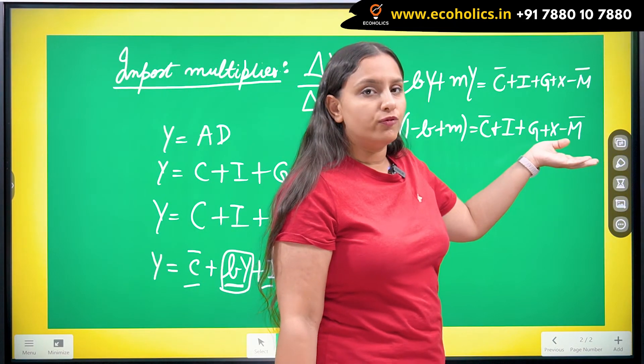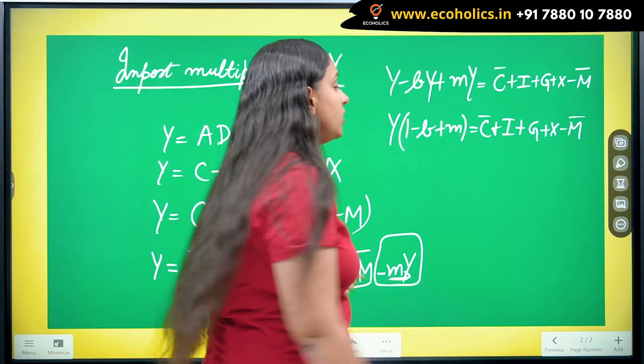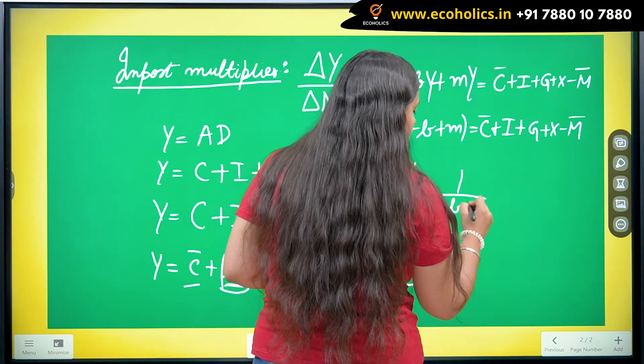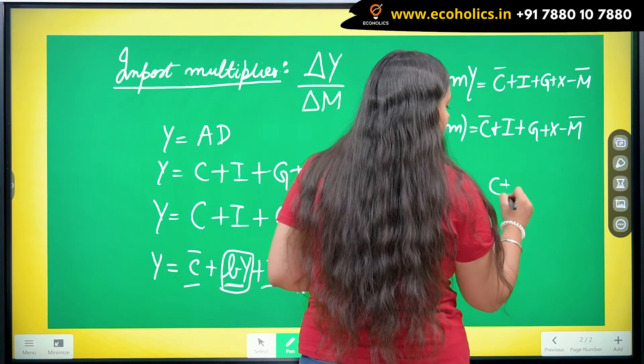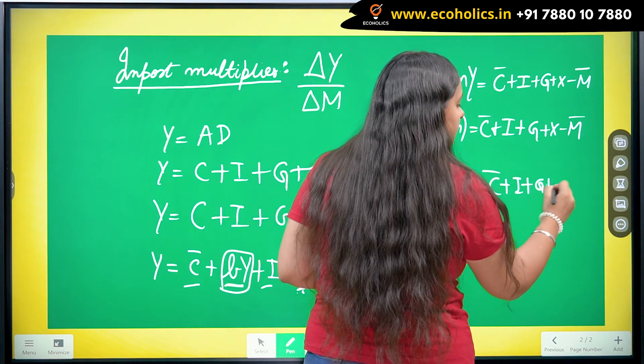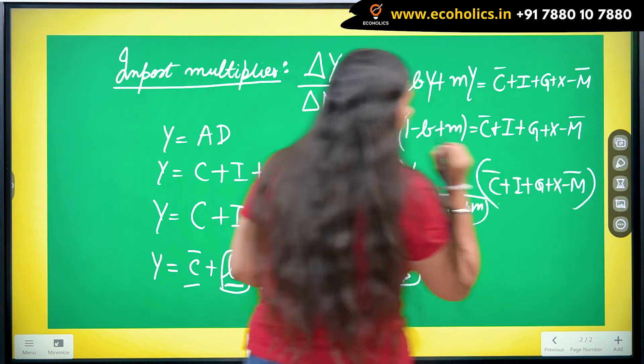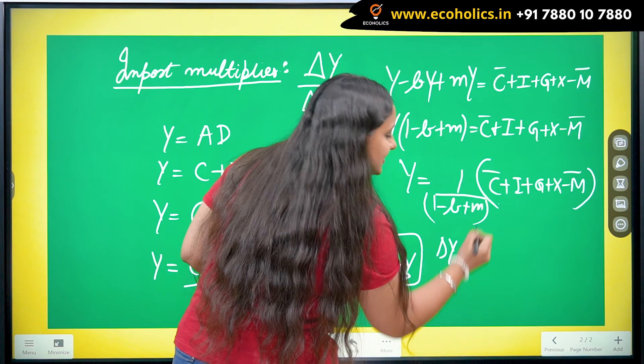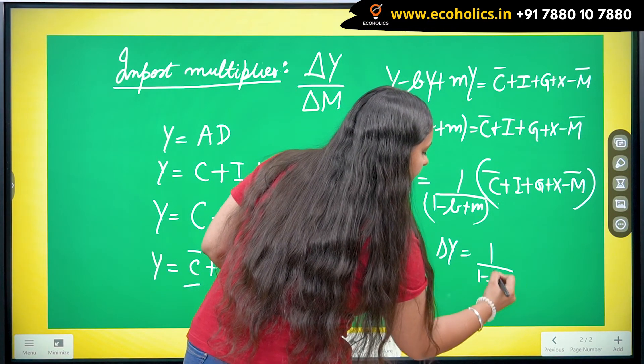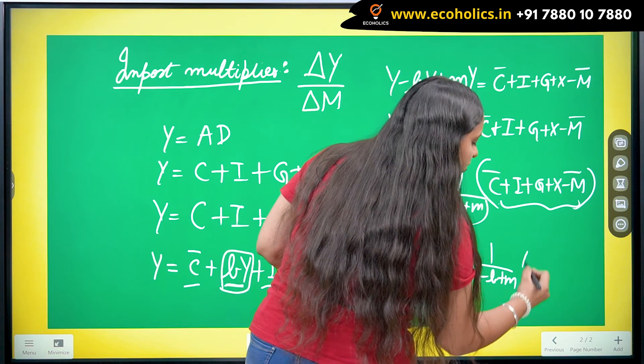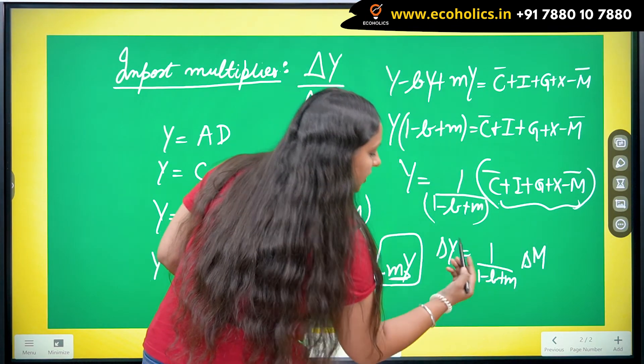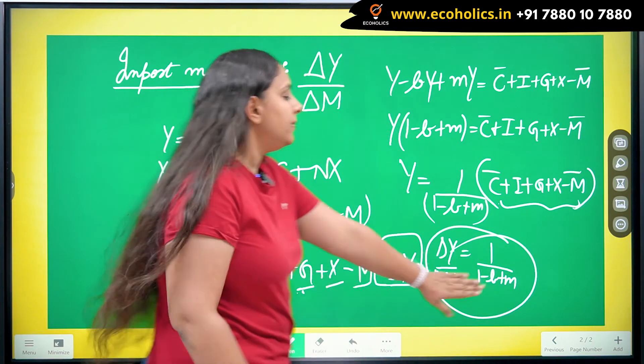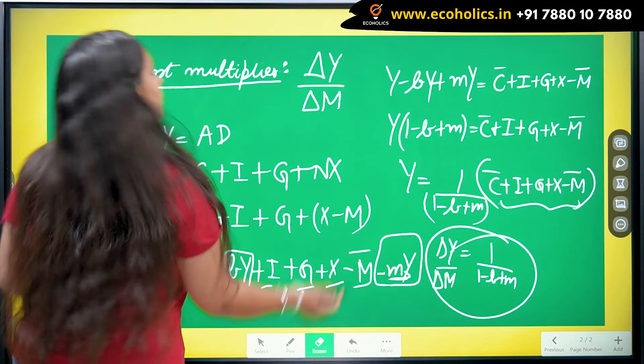Whenever this side of the scenario is going to change, the imports are going to change. I can take this to the denominator. Now the imports are changing, so if imports will change, there will be a change in Y. This is a constant number, so it is going to be same. From this bracket, I just have change in imports. If I take this to the other side, this is my import multiplier which is given by 1 over 1 minus B plus M.